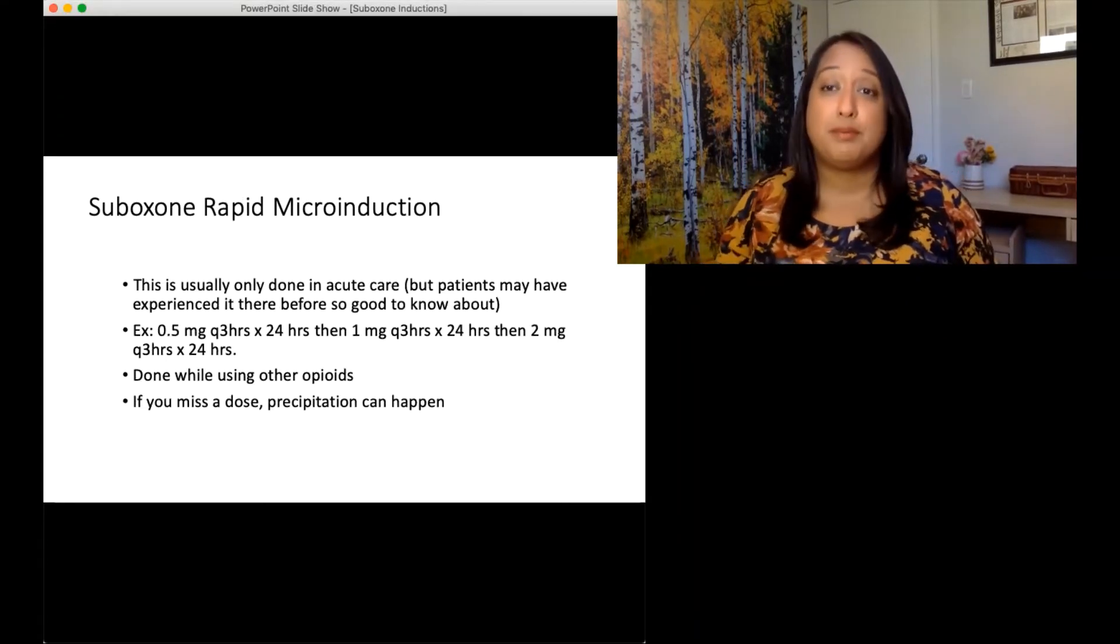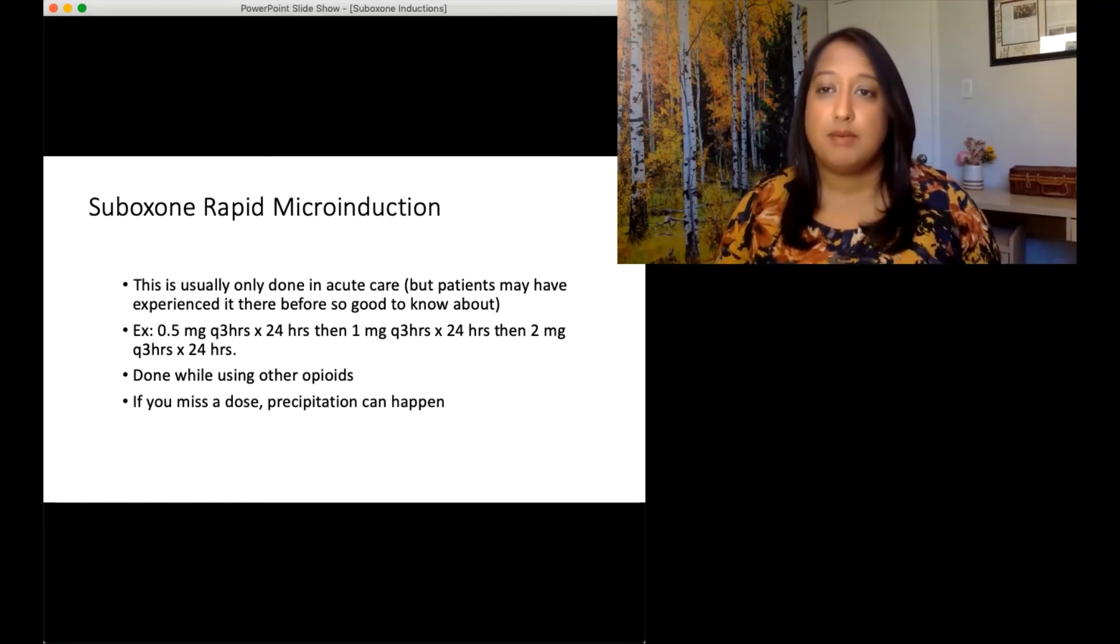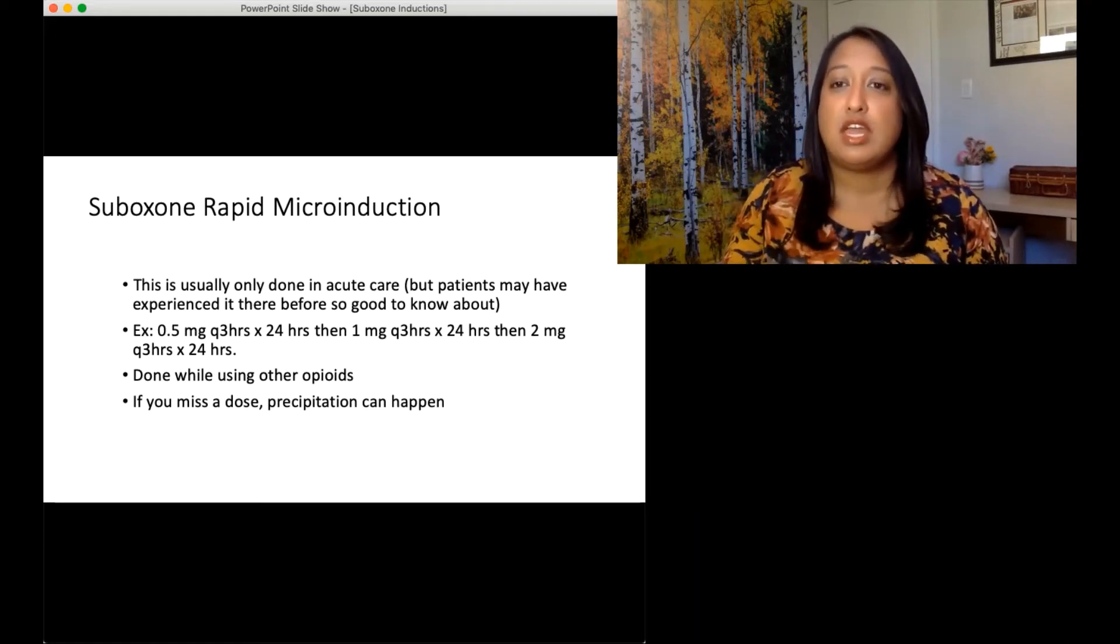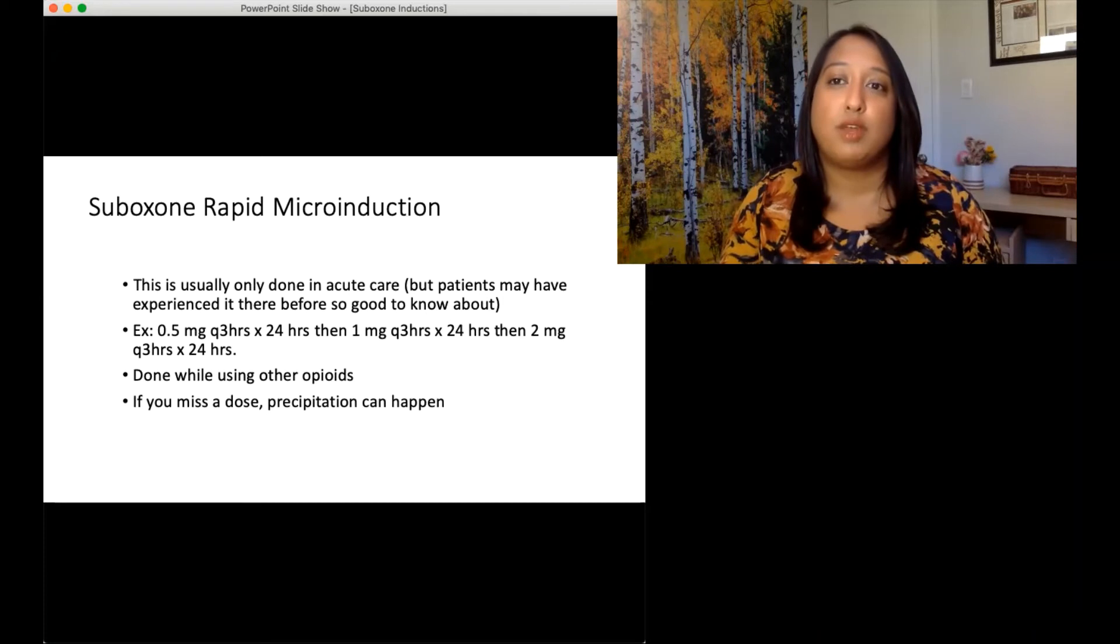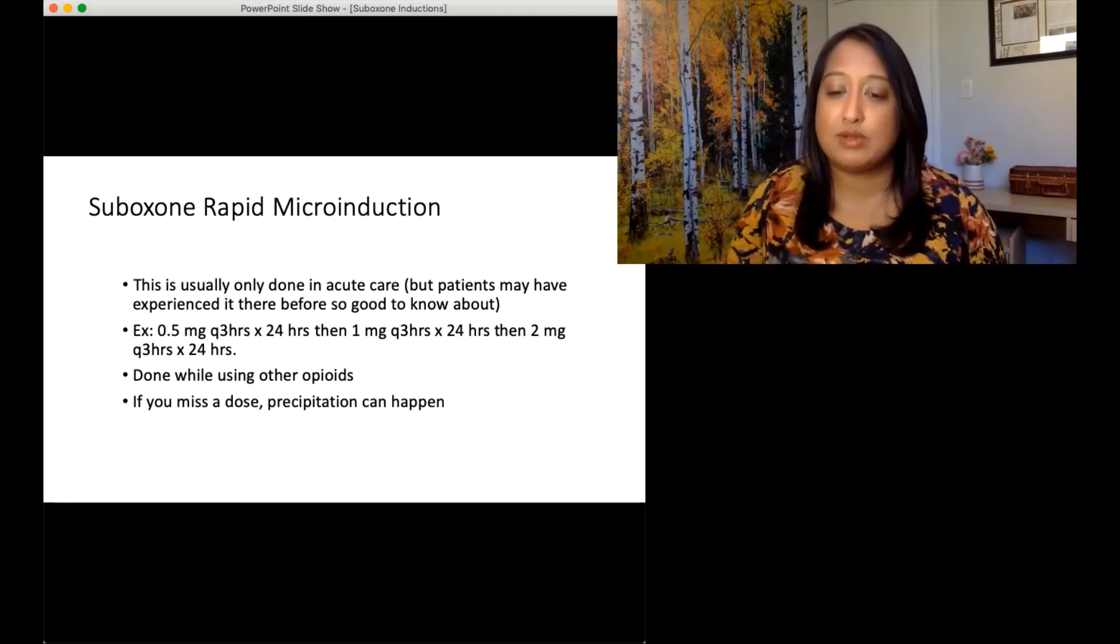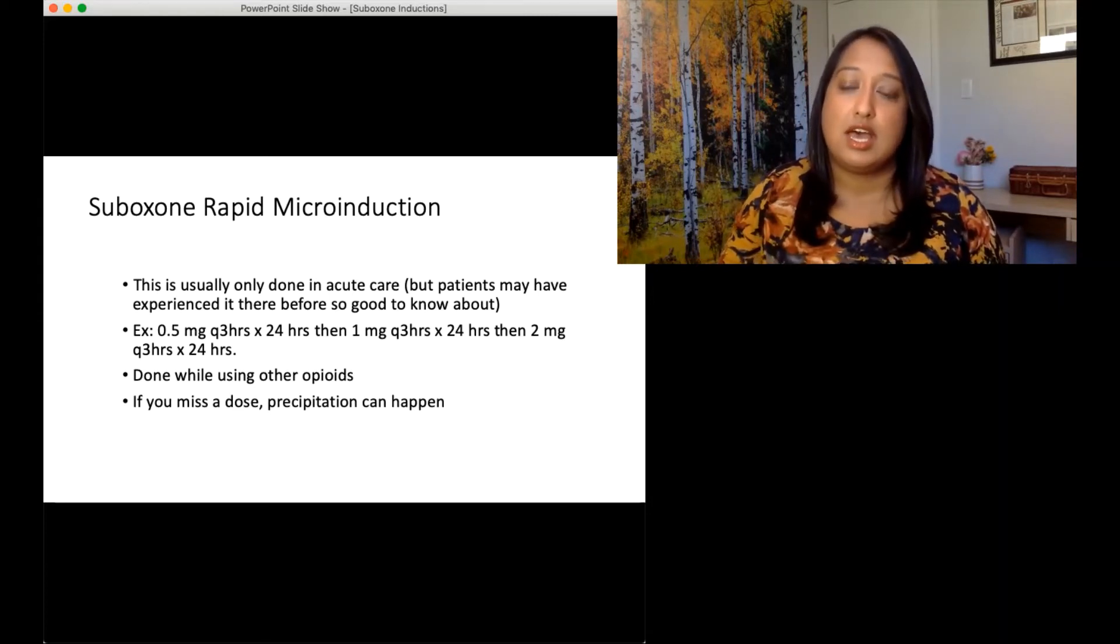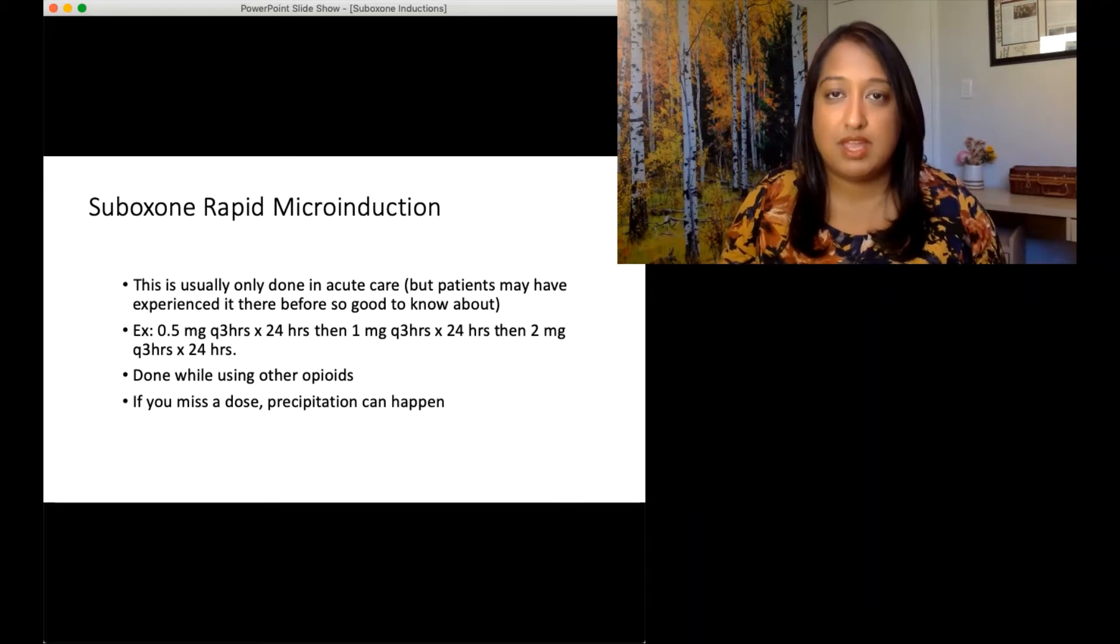So there's also a rapid micro induction. We do this quite often in acute care. So the idea is that you take one of those quarter tabs of Suboxone and you provide it every three hours for that first 24 hours. Then you increase it to one milligram every three hours, then two milligrams every three hours. So it's the same concept of sneaking in those doses. You're just doing it more regularly and you're doing it in a setting where if you do cause precipitated withdrawal, you can manage it right away by treating that precipitated withdrawal with acute opioids.